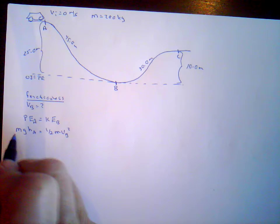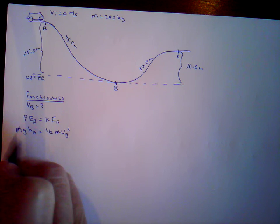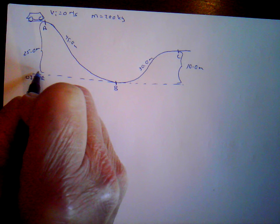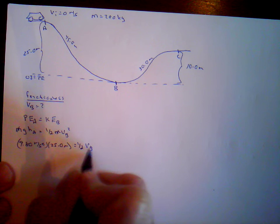Plugging in magnitudes only: 9.80 m/s² × 25 meters = ½ × v²_B. Don't forget to take the square root. You should get 22.1 meters per second for the velocity at B at the bottom of that path.